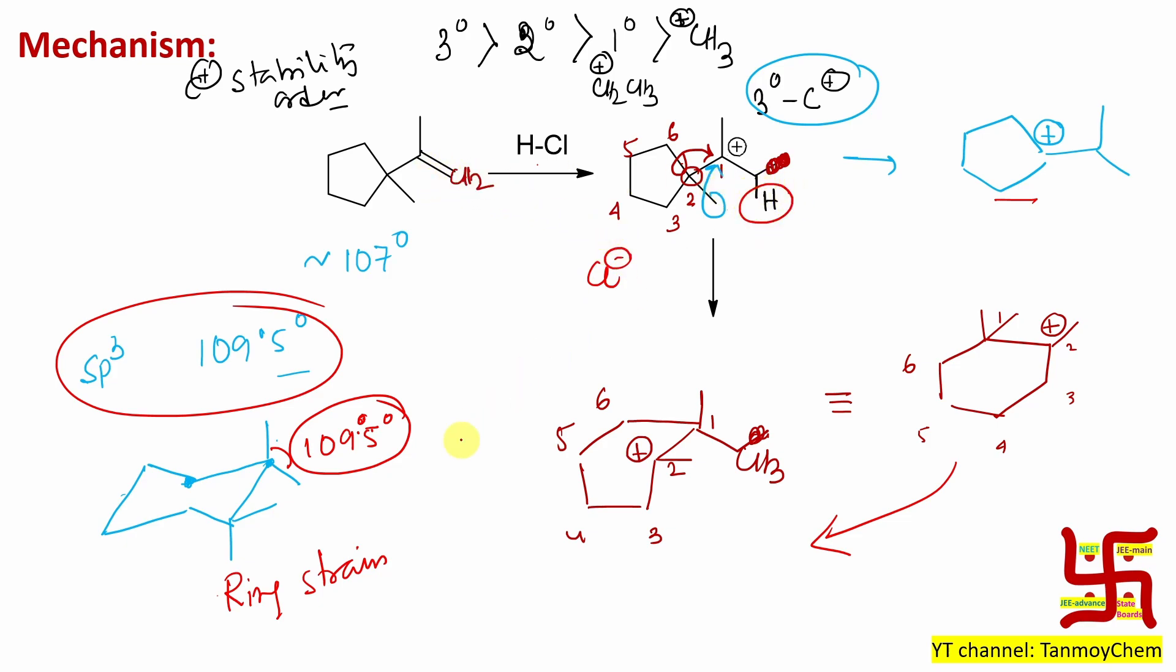So which one is remaining? Obviously chloride minus is remaining as a counter anion, because everywhere I am talking about carbocation. Who is balancing the charge? This chloride minus will be attached there. So what will be the product? It's a six-member ring, two methyl, one methyl. This is the product.